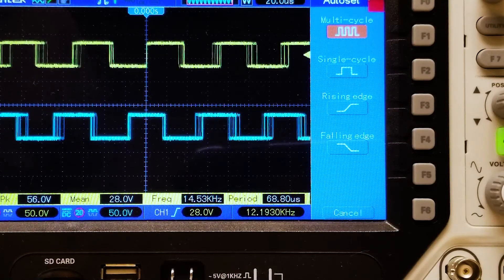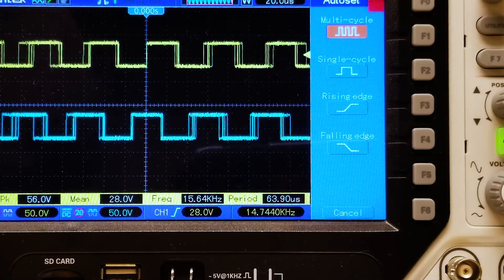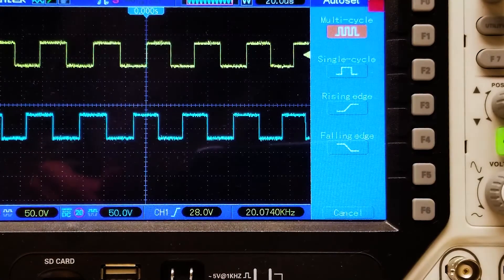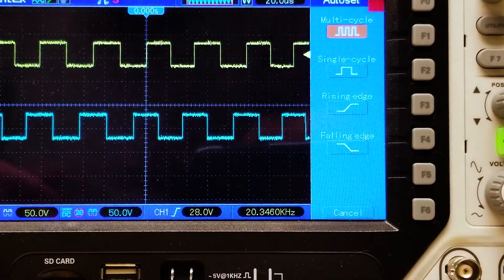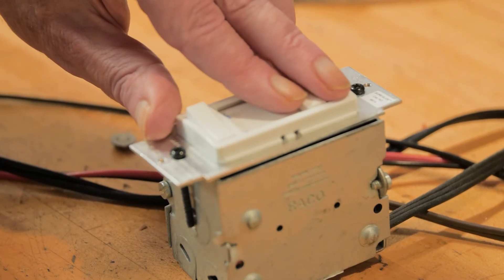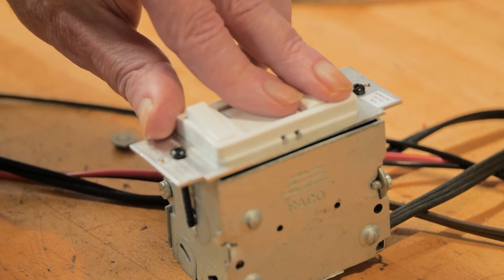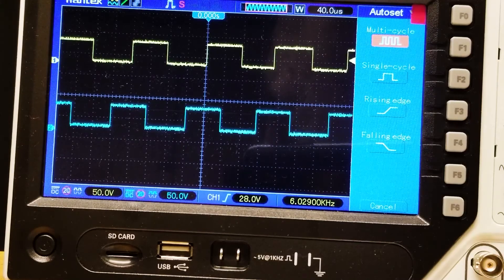One last thing we'll say about the encoders from CUI Devices is that they provide push-pull outputs rather than the open collector outputs you sometimes find on other encoders. That meant all we had to do was connect our scope probe to the A and B lines to get a display of the quadrature signals. We didn't have to connect pull-up resistors as we would have had to do otherwise.